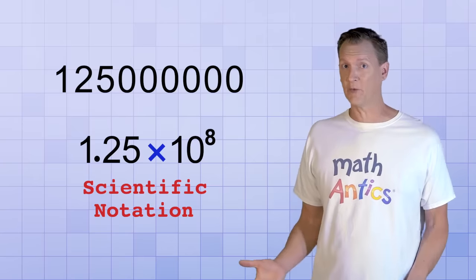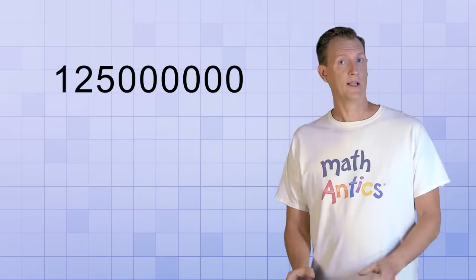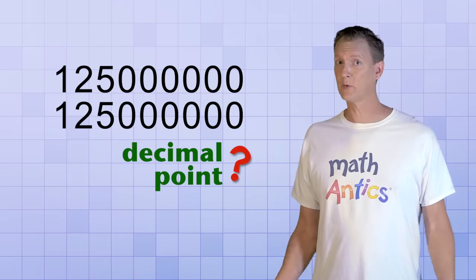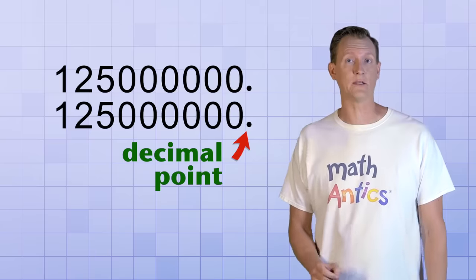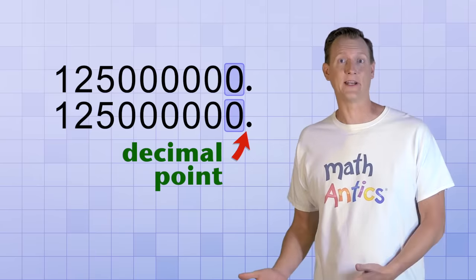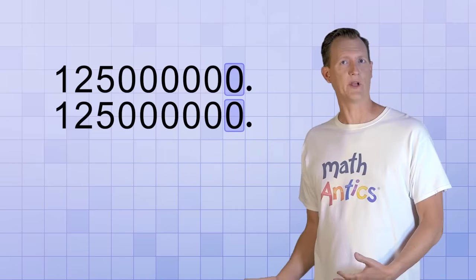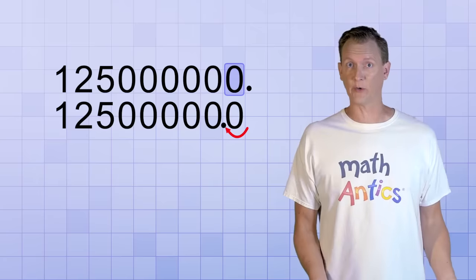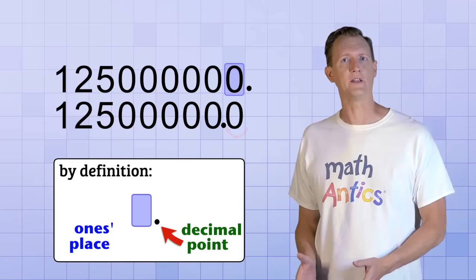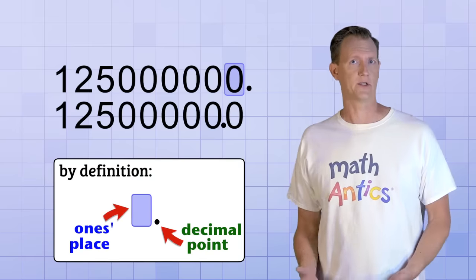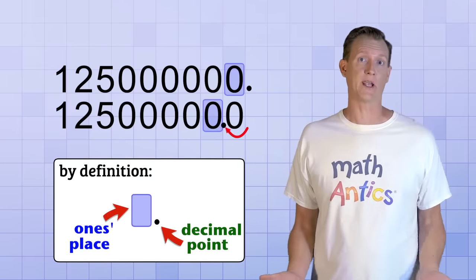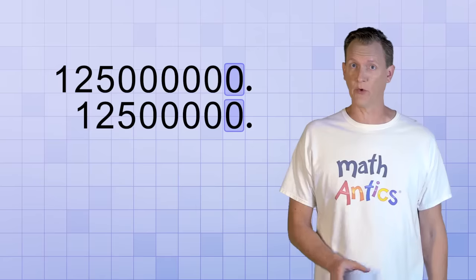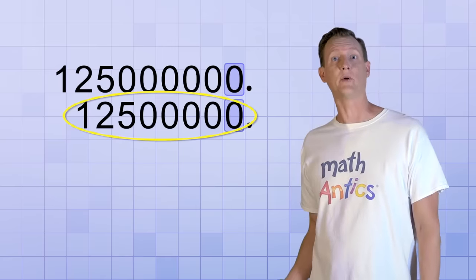Want to see how these two numbers are just different ways of writing the same thing? Let's start by making a copy of our big number and messing with its decimal point a bit. Where's the decimal point, you ask? Remember that it's always right here immediately to the right of the ones place — we just don't need to show it if there aren't any decimal digits. So what would happen if we shift the decimal point one place to the left? Well, doing that would change the number. By definition, the decimal point is always immediately to the right of the ones place, so shifting the decimal point shifts the ones place and all the other number places too.